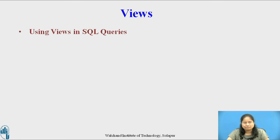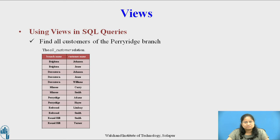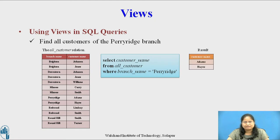Consider a query on the view definition from the previous slide. Using the view all_customer, we can find all the customers of the Perryridge branch. The result of view all_customer is given on the slide. The query for all customers of the Perryridge branch is: SELECT customer_name FROM all_customer WHERE branch_name = 'Perryridge'. The result of this query contains two tuples: Adams and Hayes. View names may appear in a query anywhere a relation name may appear.